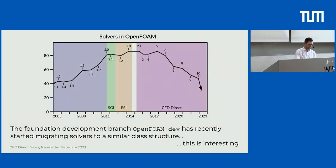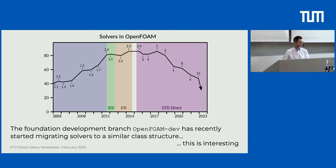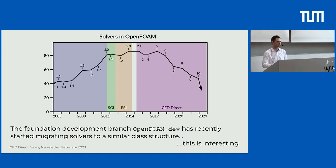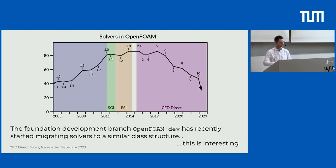The ESI/OpenCFD newsletter recently showed the number of solver executables in OpenFOAM over time. They initially had 40, peaked at 80 in 2014, and now based on linear extrapolation are heading toward zero — or more precisely toward one. The OpenFOAM Foundation, in their development branch, has decided to follow a modular structure — the same approach solids4foam takes. This is interesting for me, as it might mean restructuring solids4foam around that, though support for other versions would be a concern.